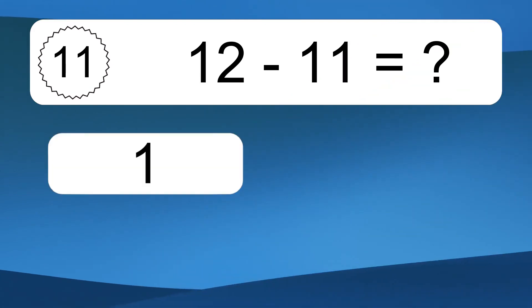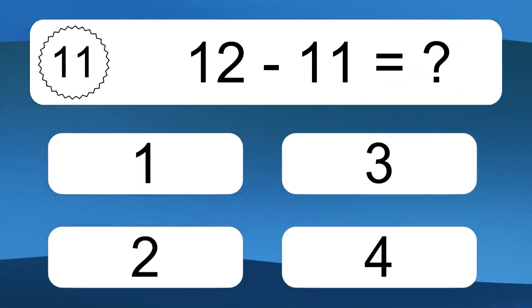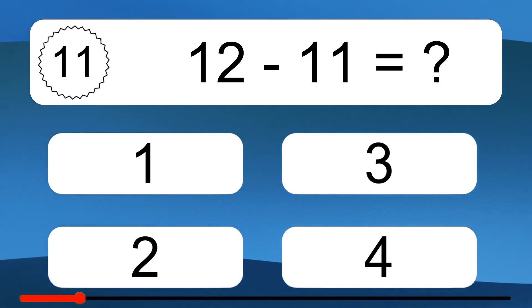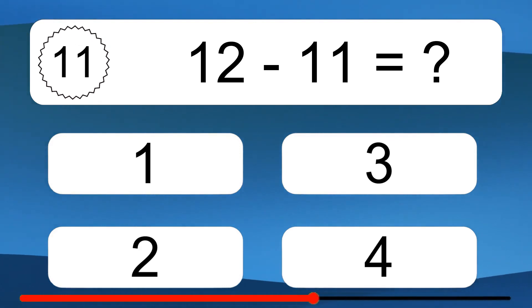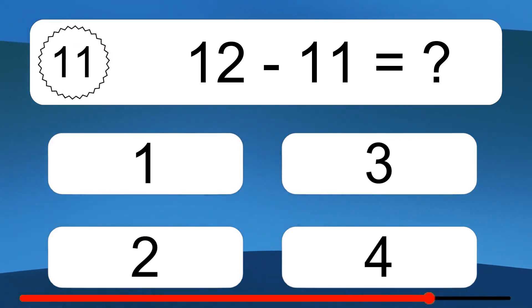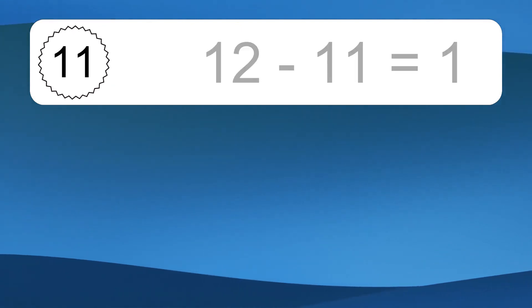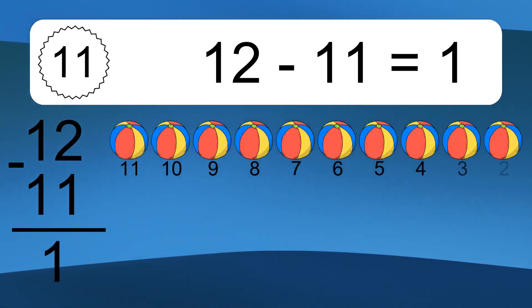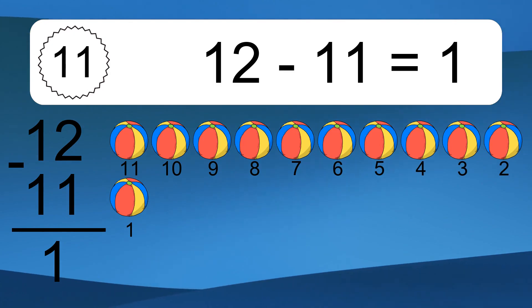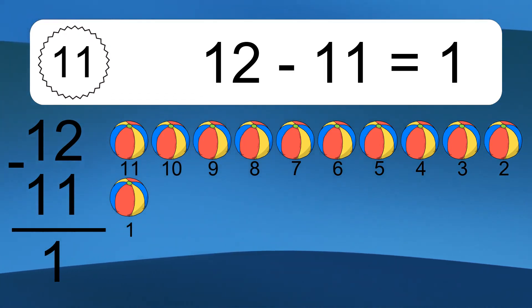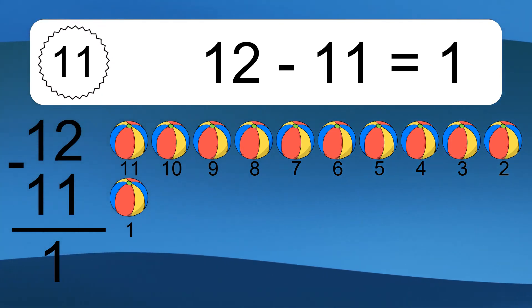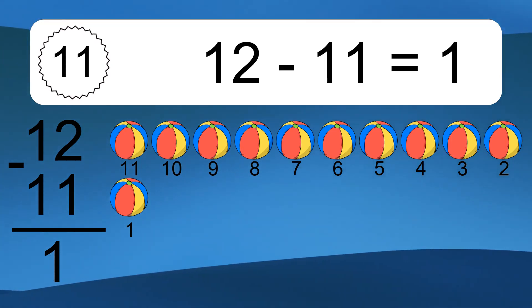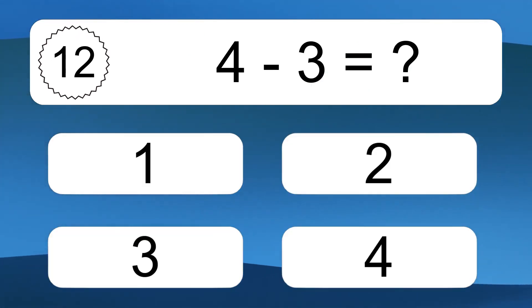12 minus 11 equals what? 12 minus 11 equals 1. Let's count it. 11, 10, 9, 8, 7, 6, 5, 4, 3, 2, 1.